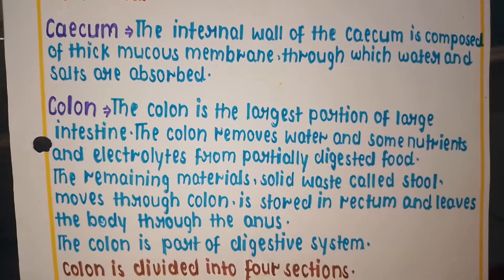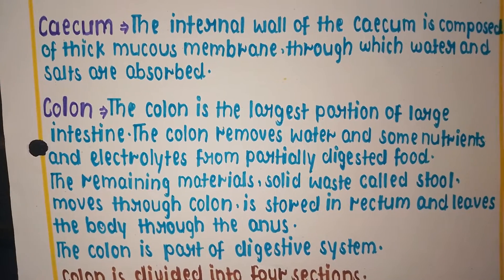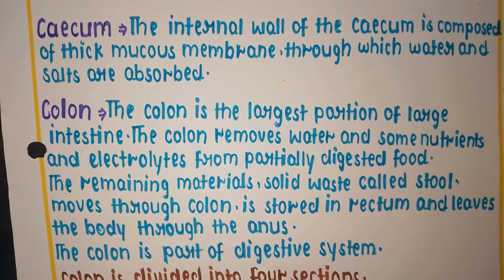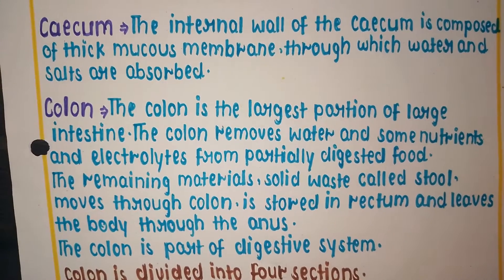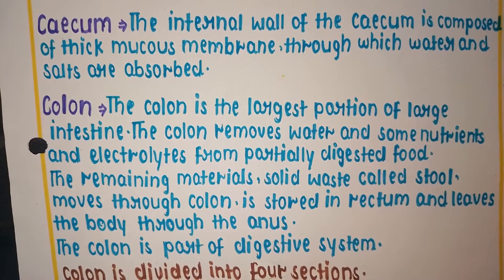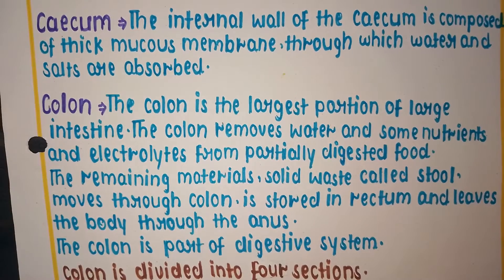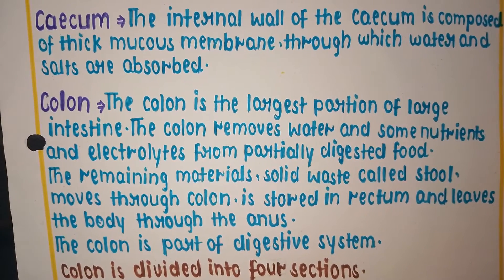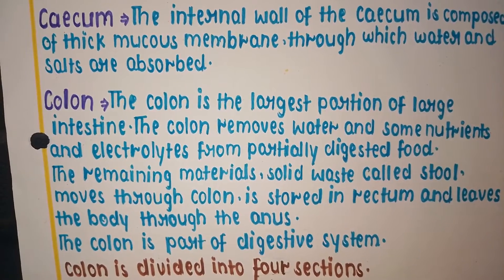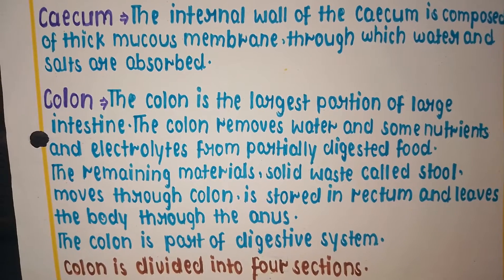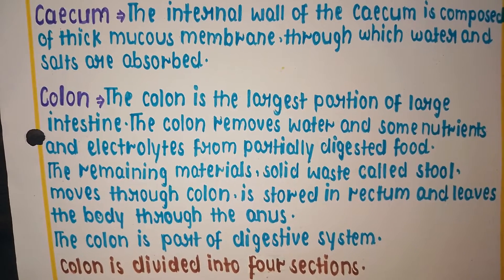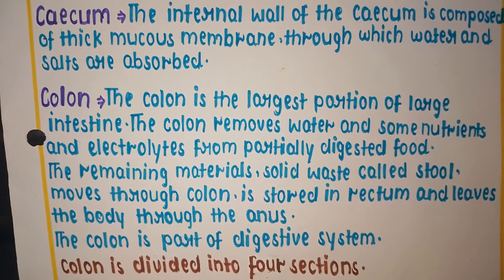The colon is the largest portion of the large intestine. The colon removes water, nutrients, and electrolytes from partially digested food. The remaining solid waste material, called stool, is stored in the rectum and leaves the body through the anus.